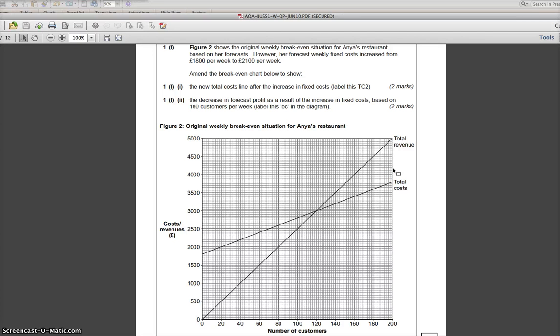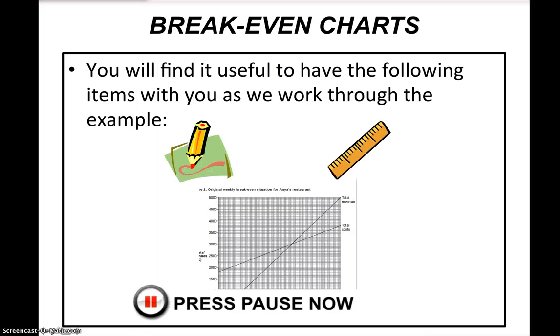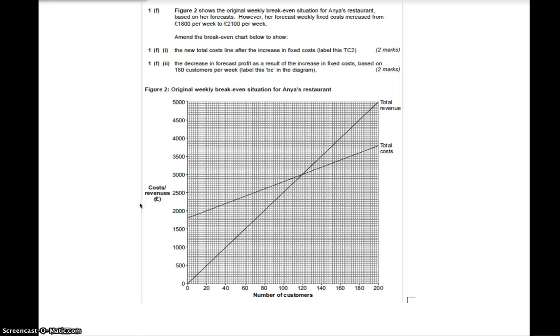What I'm going to do is run through it in a little bit more detail so that you can see exactly what's going on here. But most of the things that I'm going to do now are things that you don't actually have to do in the exam if you know what you're doing. As I've already said, you're going to end up with a line parallel to that total cost line there, with each point being £300 higher. And let's have a look at why that is.